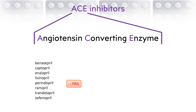Two of these drugs, captopril and lisinopril, are active in their own right. The other drugs are what we call pro-drugs. That means that they are not active themselves, but are broken down in the body by liver enzymes into the active molecule.